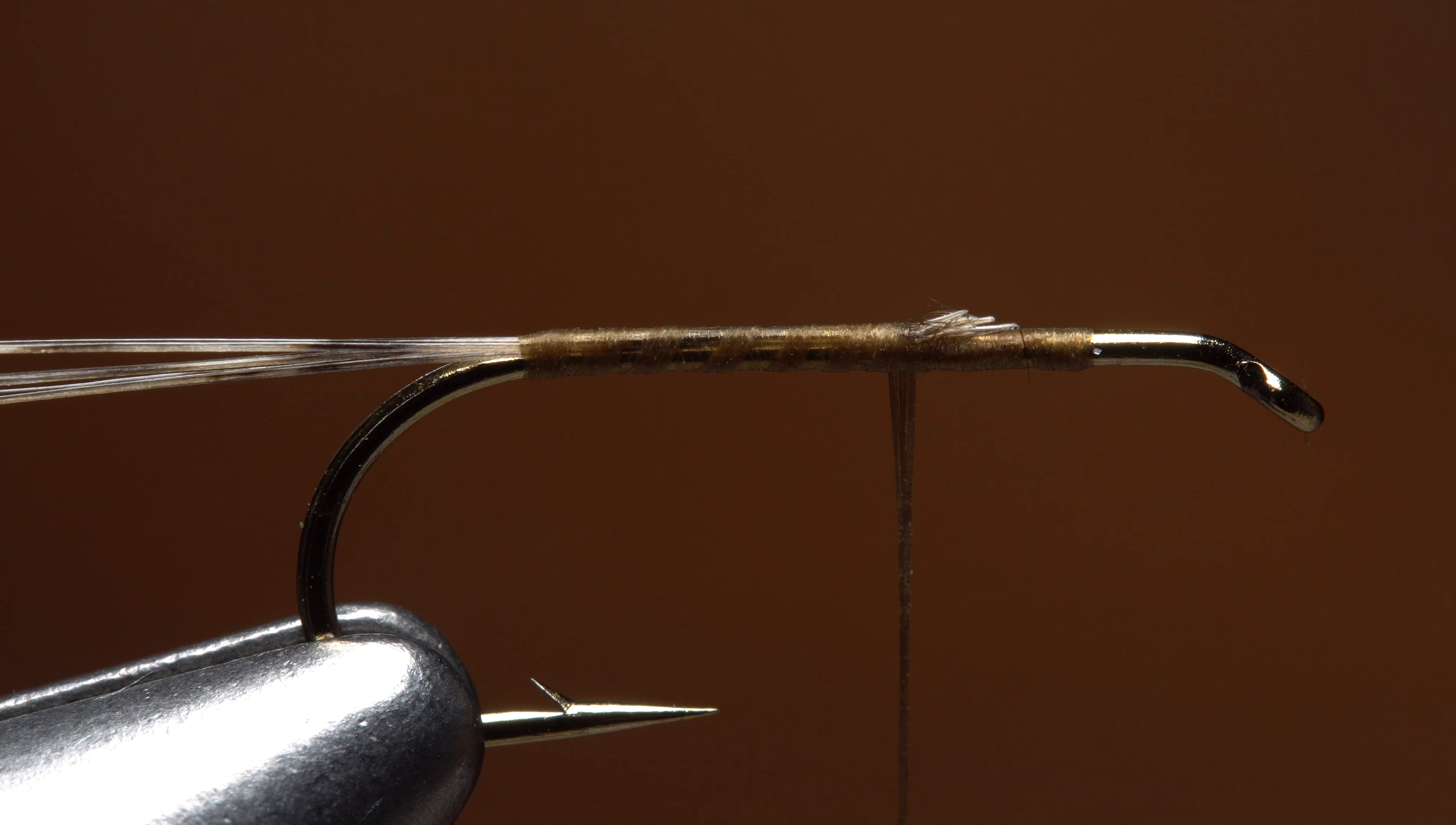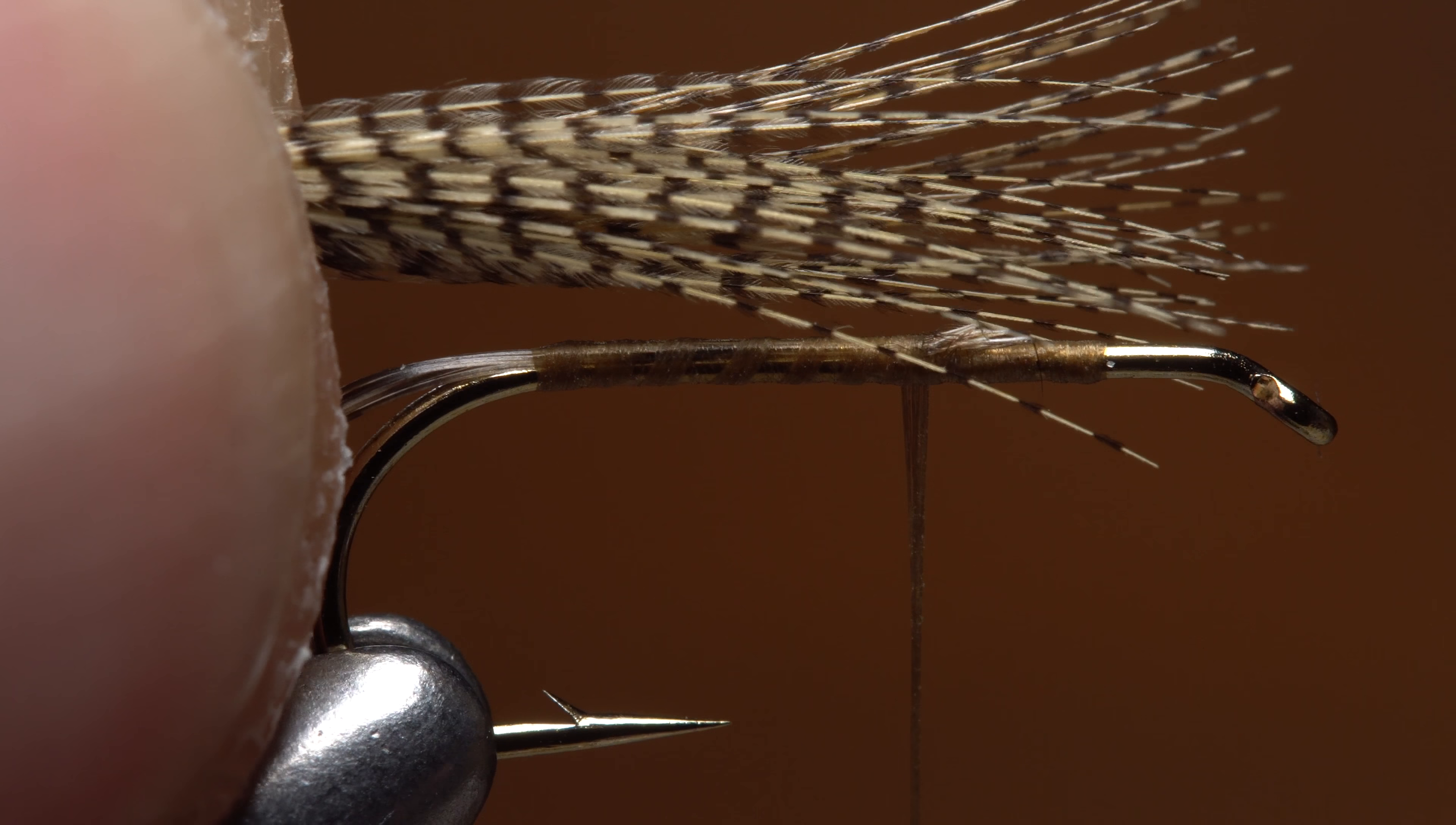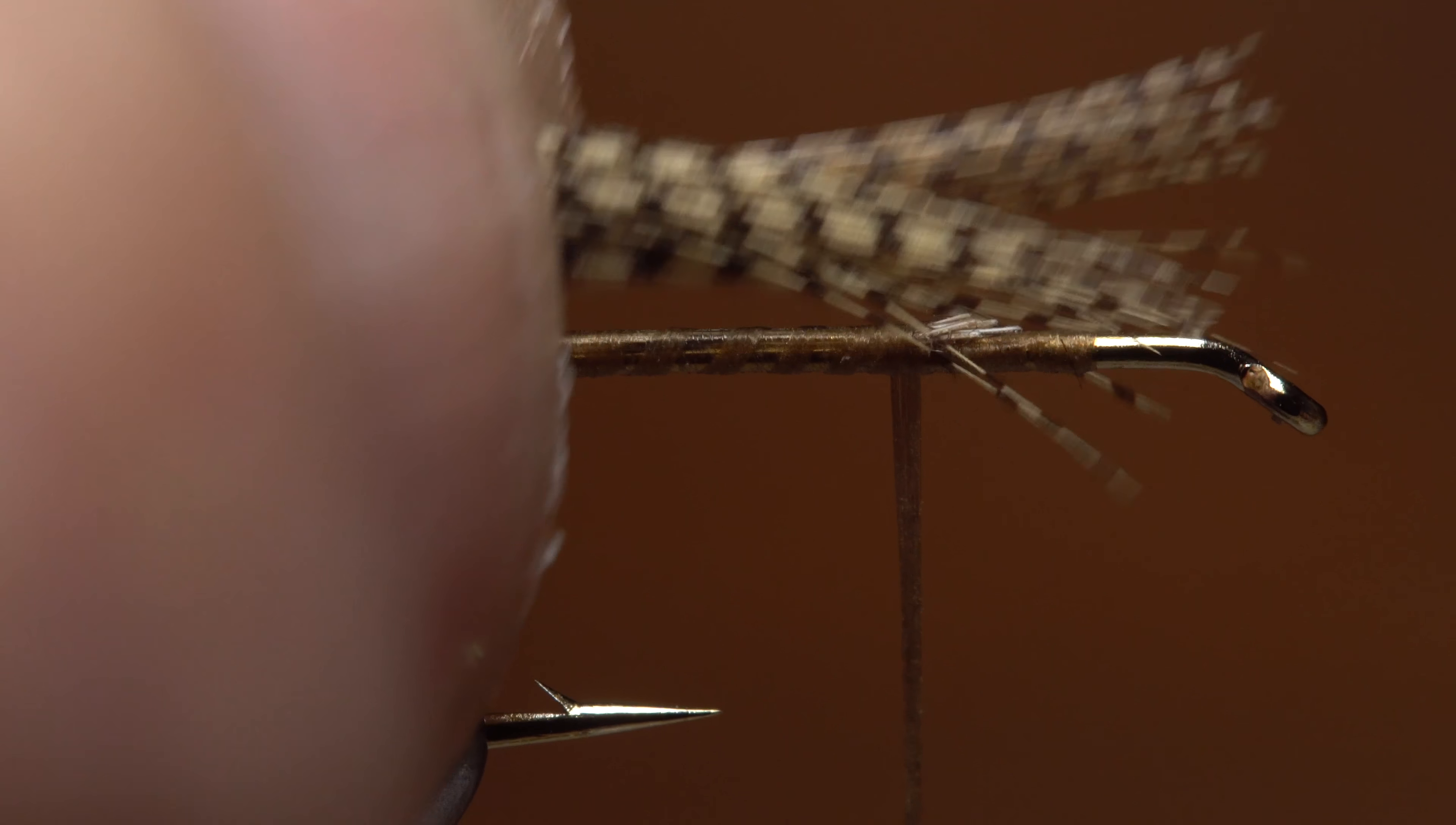A hook shank long wing can be produced in a similar manner. Align the tips with the back edge of the hook eye and mark the shank length with the thumbnail of your left hand. Transfer the measurement forward to the tie-in point.